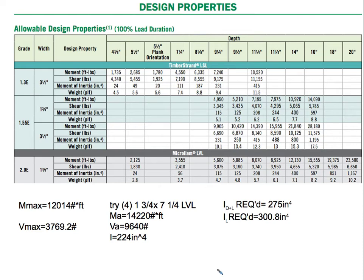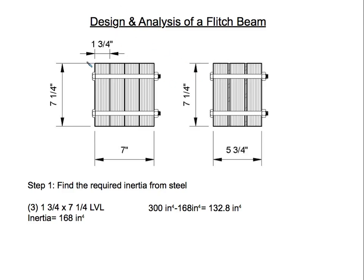Additionally, there is a depth limitation: we want the beam to be 7¼ inches deep because the existing joists are 2×8s. Going deeper would create a bump-out in the ceiling, which the architect or client may not want. So we're going to design a flitch beam instead.